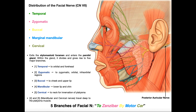'To' is temporal — the first one in green — and it's going to supply facial muscles of the orbital region and the forehead, including the frontalis. 'Zanzibar' is zygomatic, shown in purple or pink, going to the zygomatic muscles, the orbital muscles, and infraorbital regions. 'By' in yellow is the buccal branches. Generally speaking, those go closest to the mouth and lips — specifically, the buccal branches supply the cheek and the upper lip.